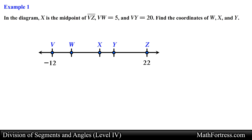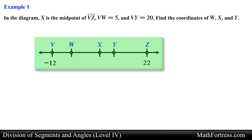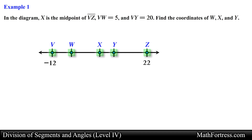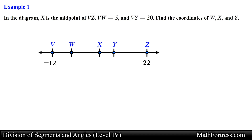In the diagram, point X is the midpoint of segment VZ. The length of segment VW equals 5 and the length of segment VY equals 20. Find the coordinates of points W, X, and Y. We are provided with a diagram of a number line with points at particular coordinates, along with the measurement of two line segments, and we are asked to determine the coordinates of three of these points. Let's start by marking the diagram with the given information.